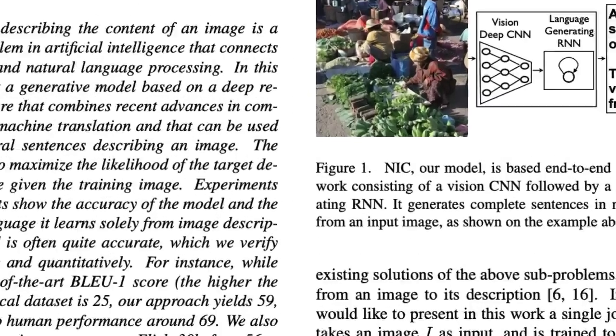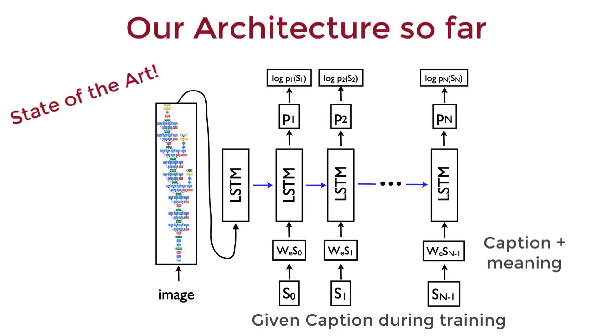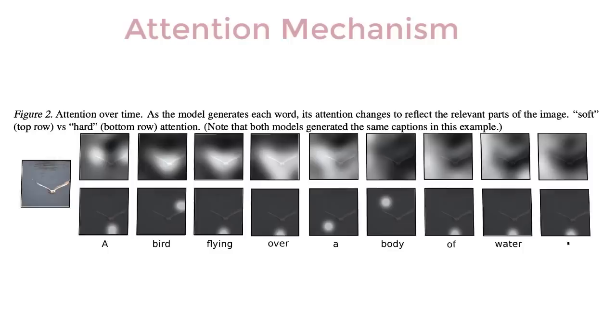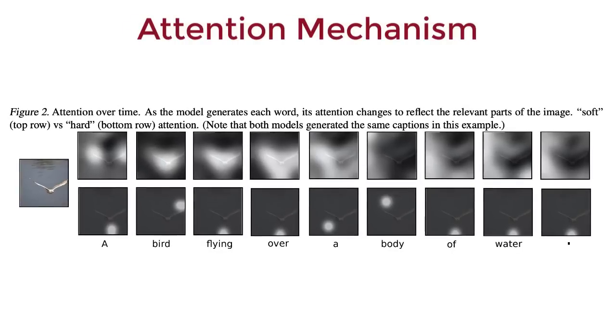But, can we go beyond this? Let's throw attention in the mix, just cause we can. Attention involves focusing on certain parts of an image while generating different words of the caption. This can help create more detailed sentences of an image. So, how do we do this?